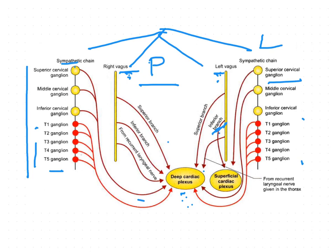The inferior cardiac cervical branch forms the superficial cardiac plexus along with the superior cervical ganglion. The remaining branches of the left vagus and the left sympathetic chain form the deep cardiac plexus on the left side.